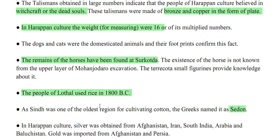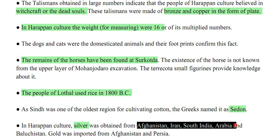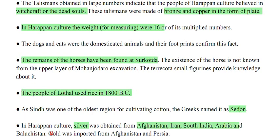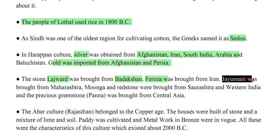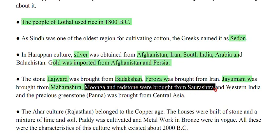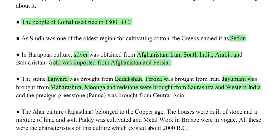In Harappan culture, silver was obtained from Afghanistan, Iran, South India, Arabia and Balochistan. Gold was imported from Afghanistan and Persia. Lapis lazuli was brought from Badakhshan; Firuza (turquoise) from Iran; Jayumani from Maharashtra; Moonga and red stone from Saurashtra and western India; and the precious green stone Panna from Central Asia.